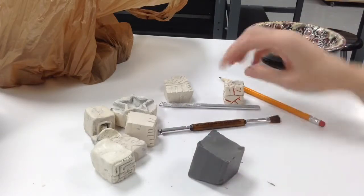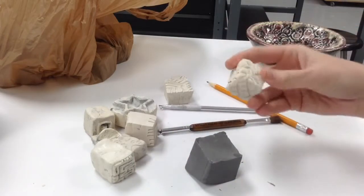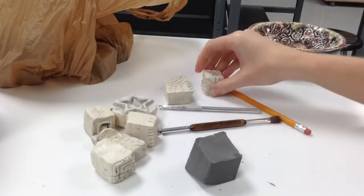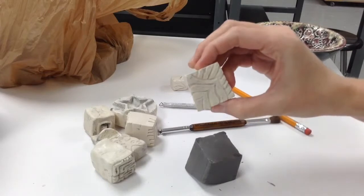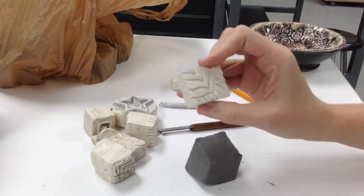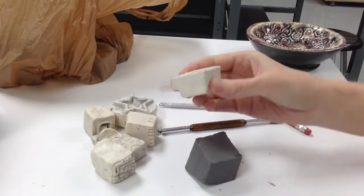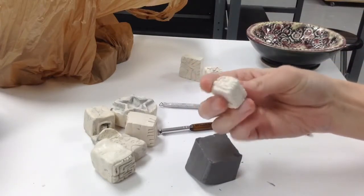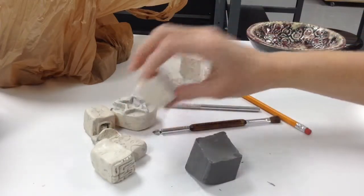A couple tips. You can put designs on every side, kind of like this one. Has a design on every single side. You can do line designs that can then be rotated when they're stamped. That makes cool patterns. You can do small stamps with simple line designs or you can do big stamps.